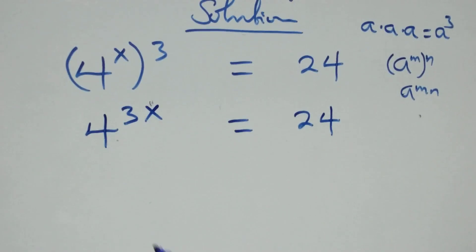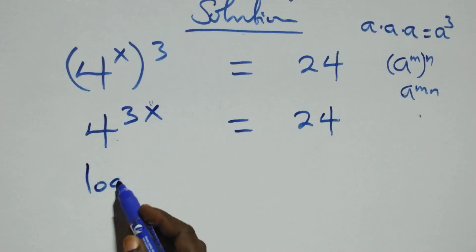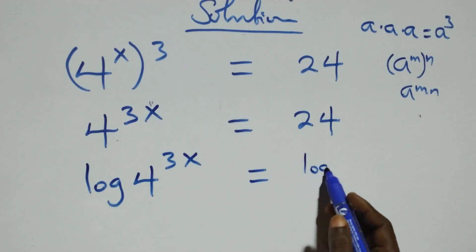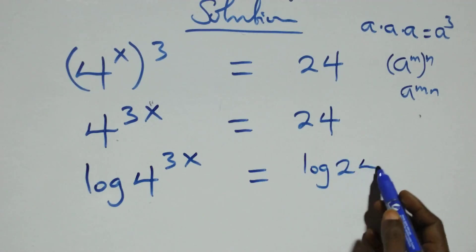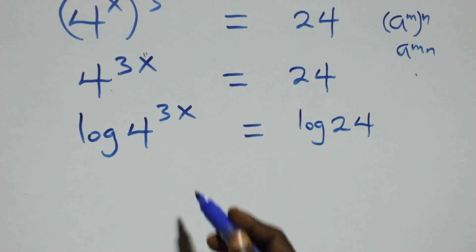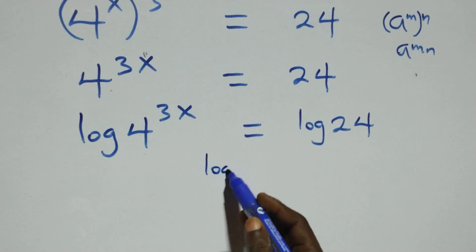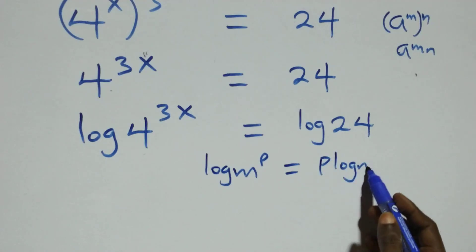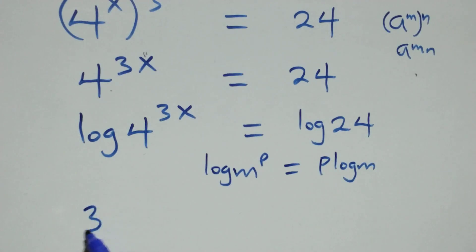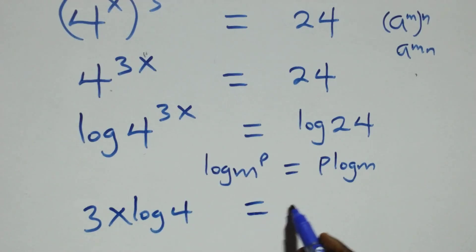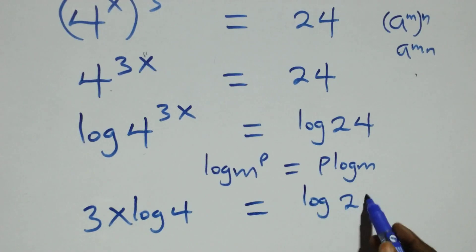The next step: we take the log on both sides. That is, we have log of 4 raised to power 3x equals log of 24. We apply the power rule of logarithms: when we have log of n raised to power p, this is the same thing as p times log n. So here we have 3x log 4 equals log 24 on this side.